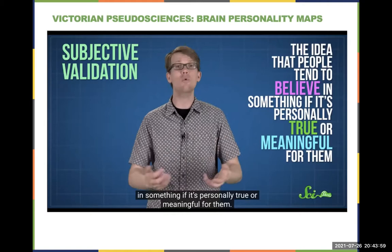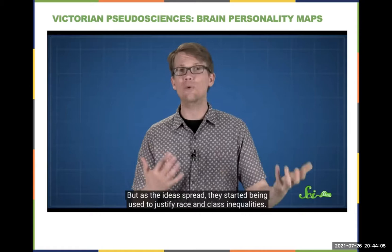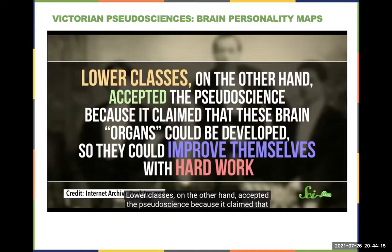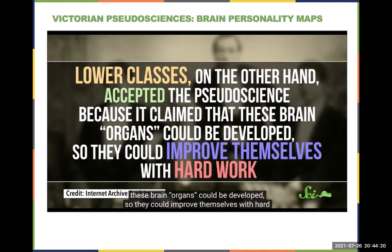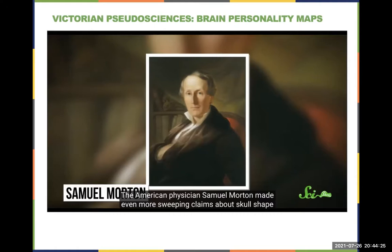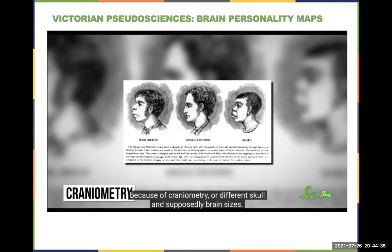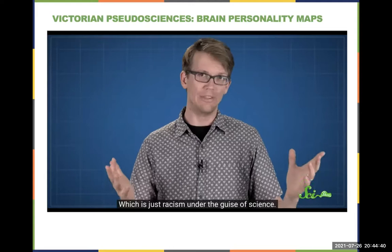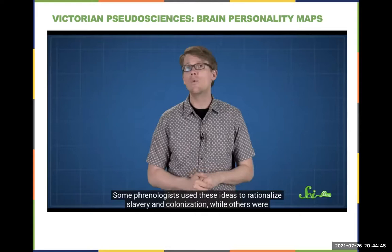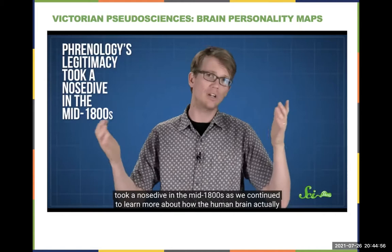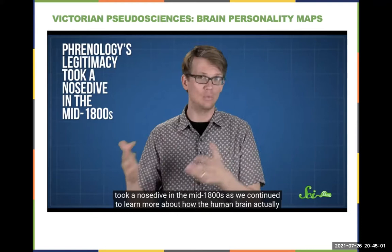Phrenology became enormously popular in the UK around the early 1800s and spread to America, France, and Germany. It was largely garbage and guesswork. Many scientists were vocal critics, but there wasn't enough evidence to thoroughly debunk it. The public loved it — like horoscopes — because of subjective validation: people believe things that feel personally meaningful. Eventually the pseudoscience was used to justify race and class inequalities.